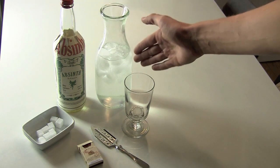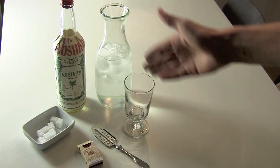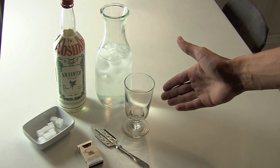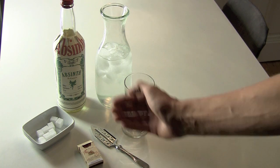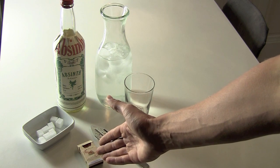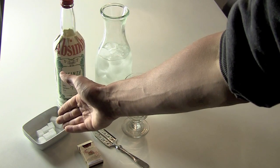We want to serve absinthe. To do this right we need absinthe, ice-cold water, a fire-safe absinthe glass, absinthe spoon, some matches, and sugar cubes. And the sugar cubes are very important.